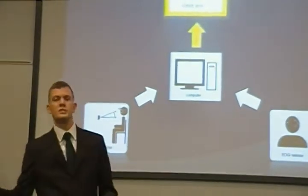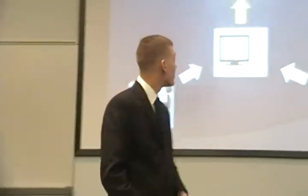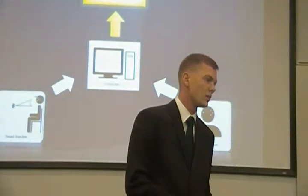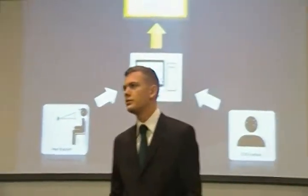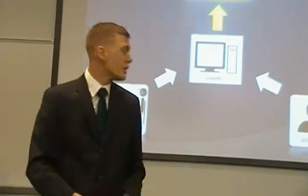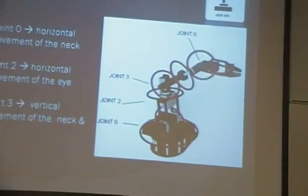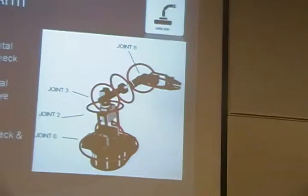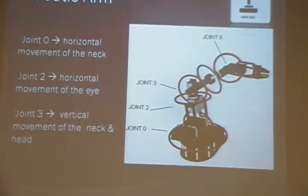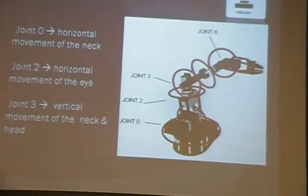With the EOG sensor and the head tracker working together, we can track exactly where the eyes are looking. Our objective was to get the robot arm to point where the user is looking. To do that, we mapped different joints on the robot arm to different movements of the head and eyes. For instance, joint zero: as a user moves their head to the left, joint zero moves to the left. As the user moves their head to the right, joint zero moves to the right, and the whole robot rotates.